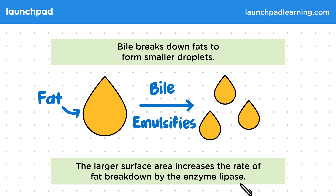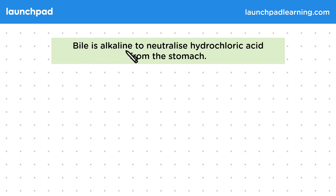The larger surface area increases the rate of fat breakdown by the enzyme lipase. So what else does bile do? Bile is alkaline, to neutralize hydrochloric acid from the stomach.